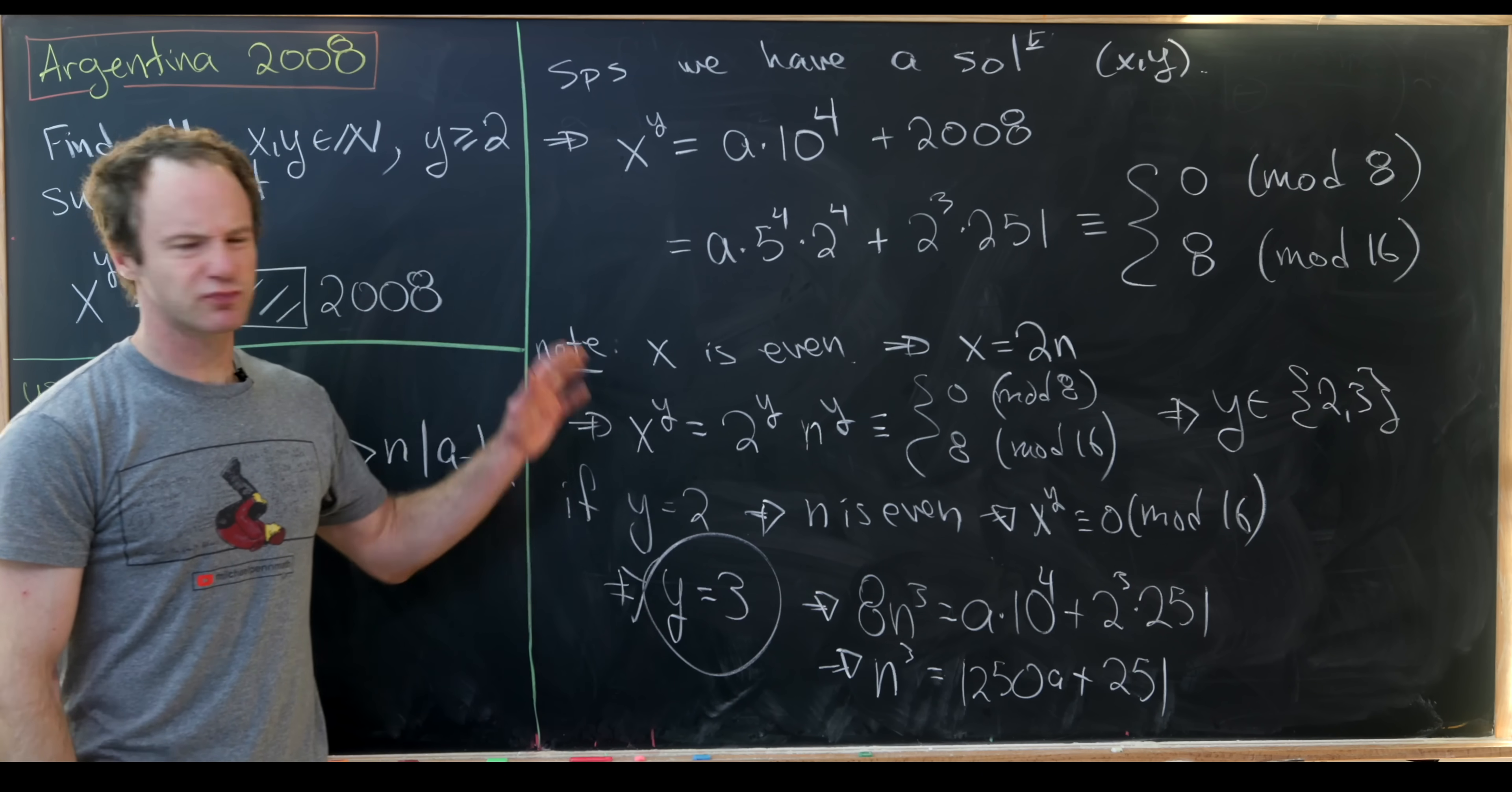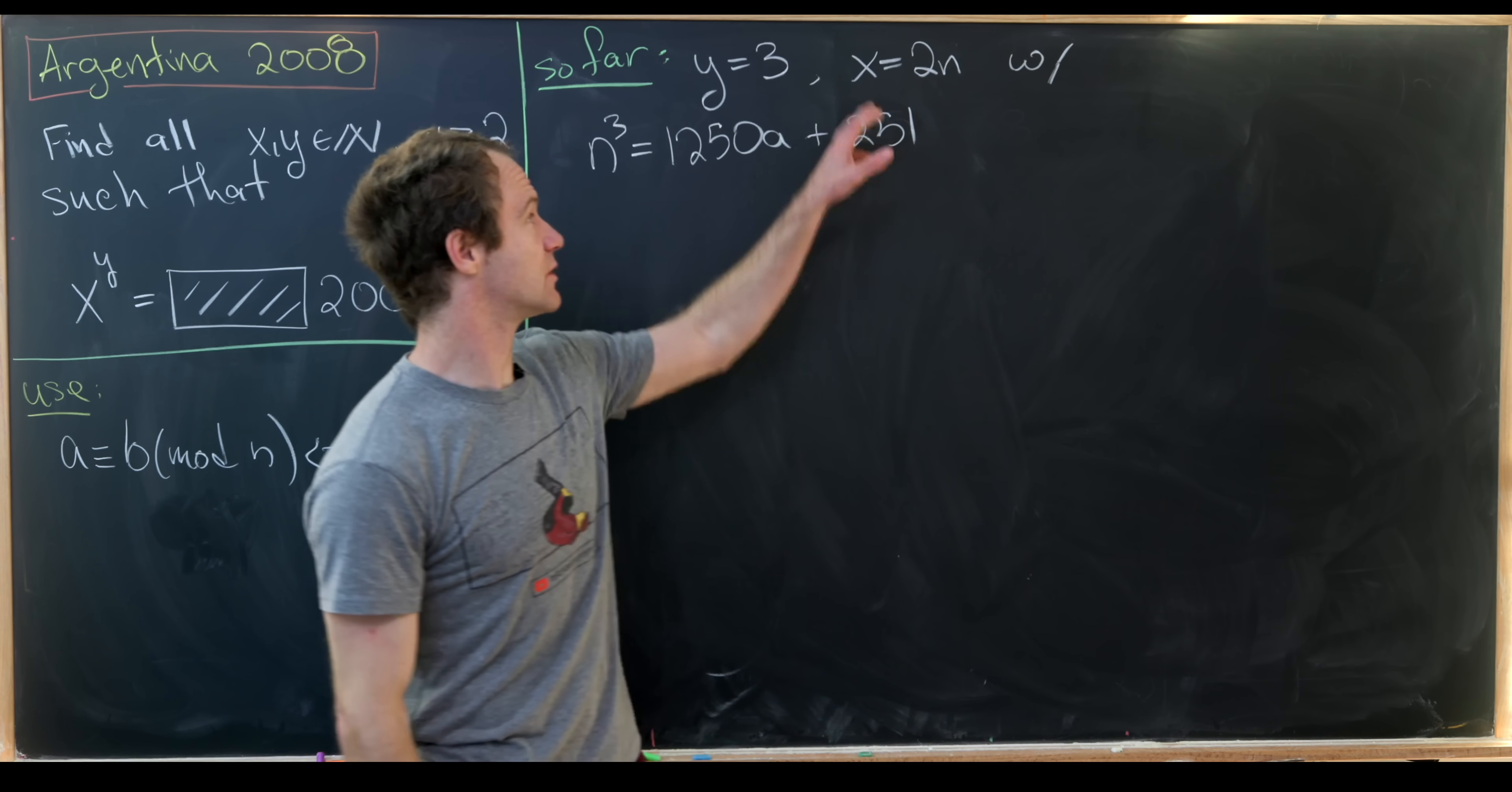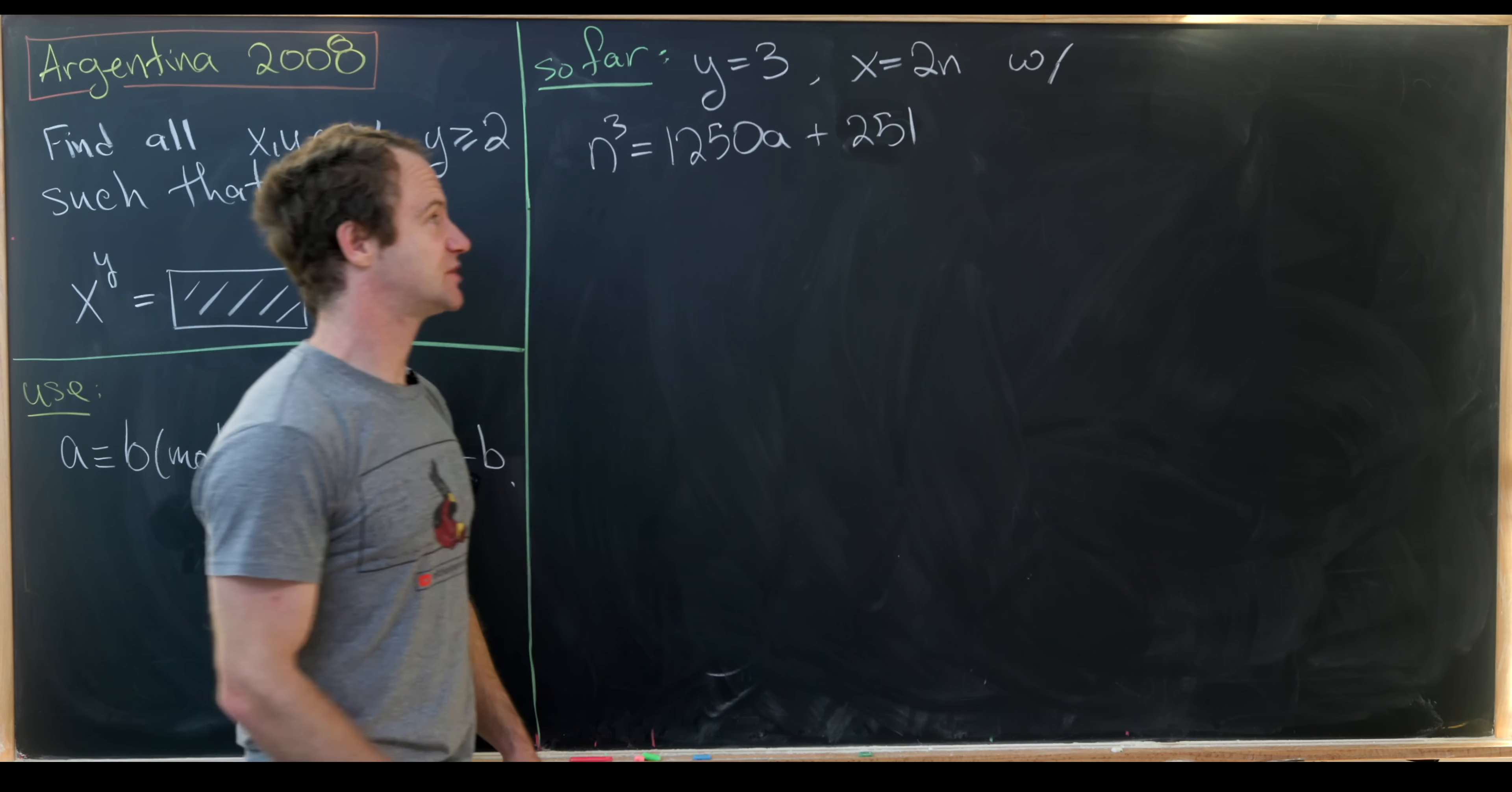Okay, so let's bring that data up to the top. So far we've determined that y had to be equal to 3 in our equation. We also wrote x as 2 times n and then n satisfies the following equation: n cubed is 1250a plus 251.